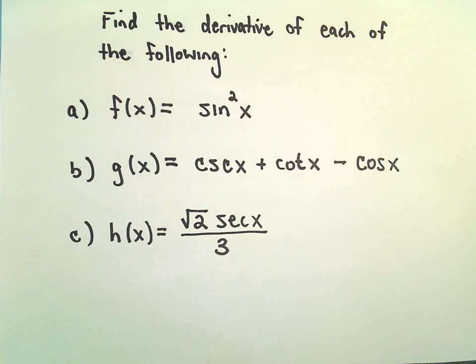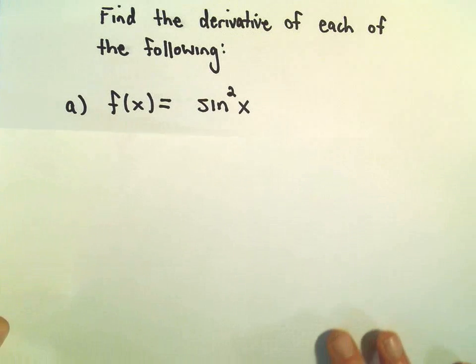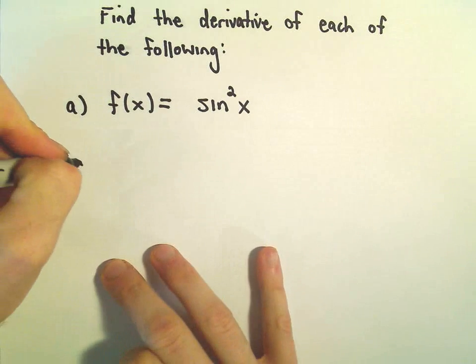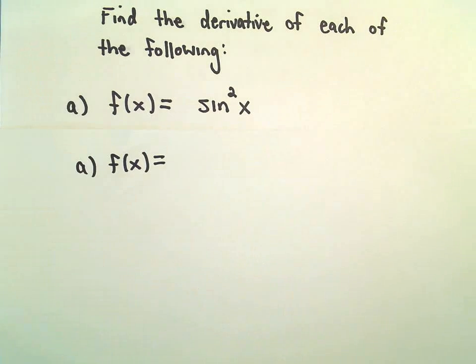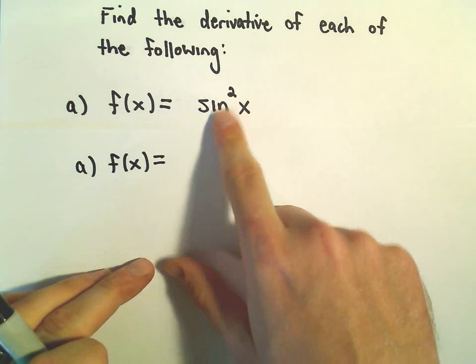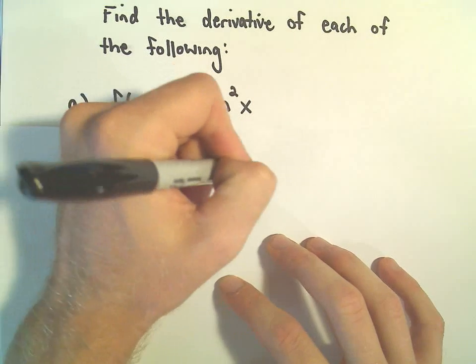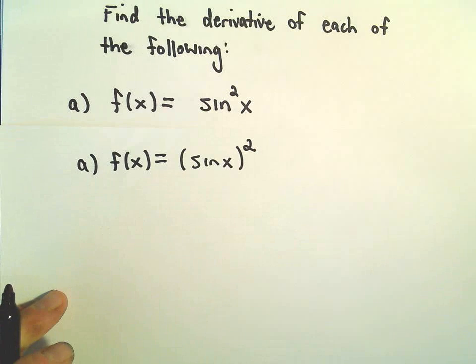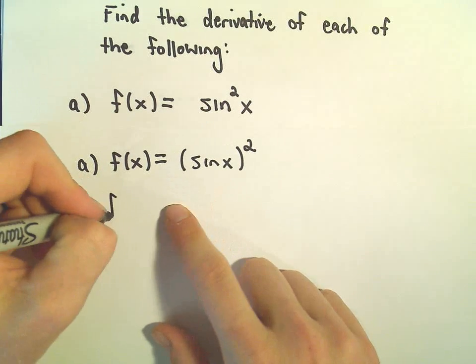Alright, just a few different derivative problems. Nothing crazy in these. I think probably we can do these all at once. In part A, we're actually going to have to use the chain rule. Be a little careful. Any time you have sine of x squared, what that means is sine of x all being squared.